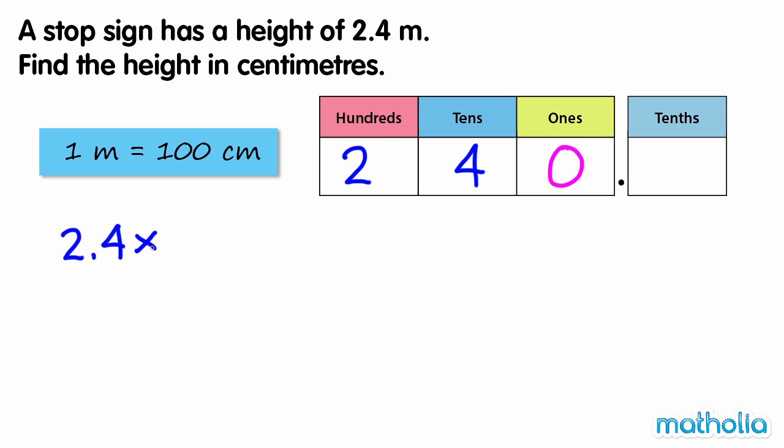2.4 times 100 equals 240. So 2.4 metres equals 240 centimetres.